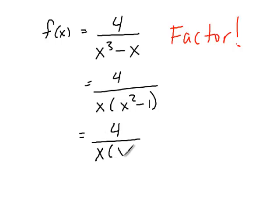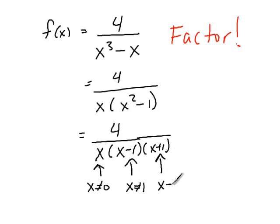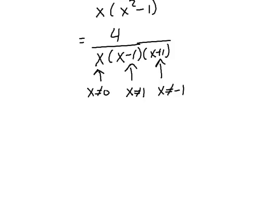So now we can see that from this factor X, this gives us that X cannot be 0. This gives us that X cannot be 1, because 1 minus 1 would be 0. And this factor gives us that X cannot be negative 1. So we have three values that X cannot be.